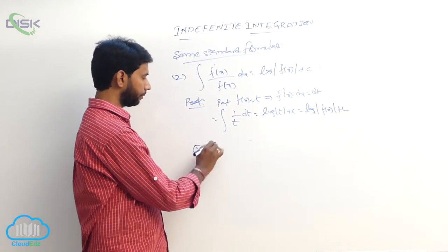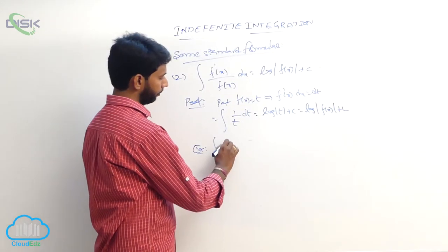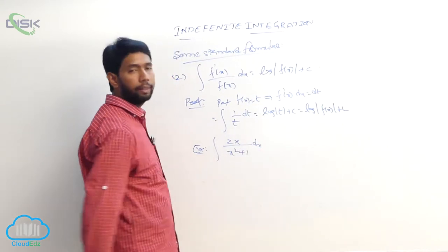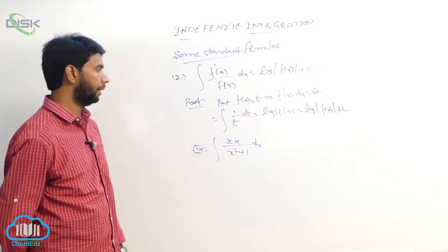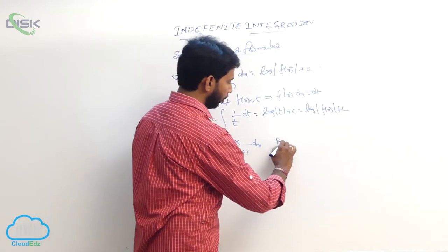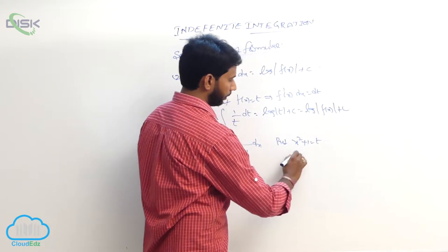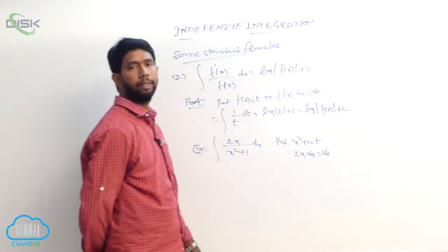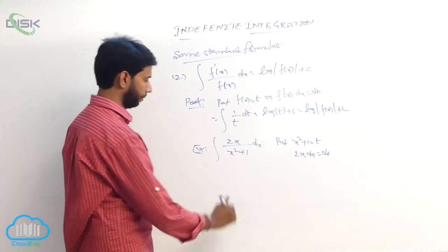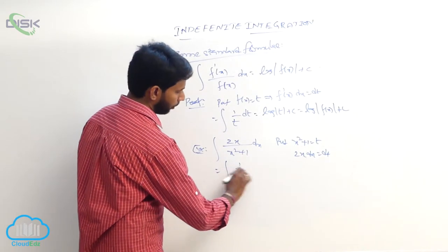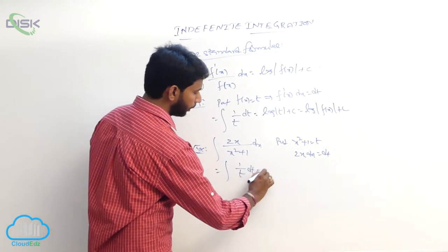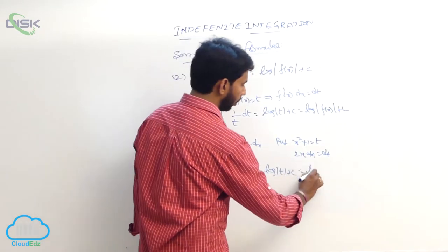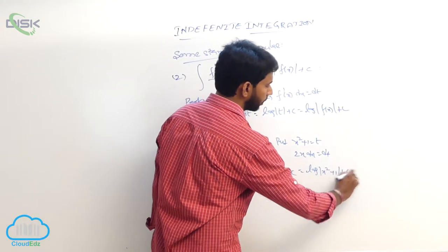Example: integral of 2x/(x² + 1) dx. Put x² + 1 equal to t, so 2x dx equals dt. The integral becomes integral of (1/t) dt equals log|t| plus constant, which equals log|x² + 1| plus constant.